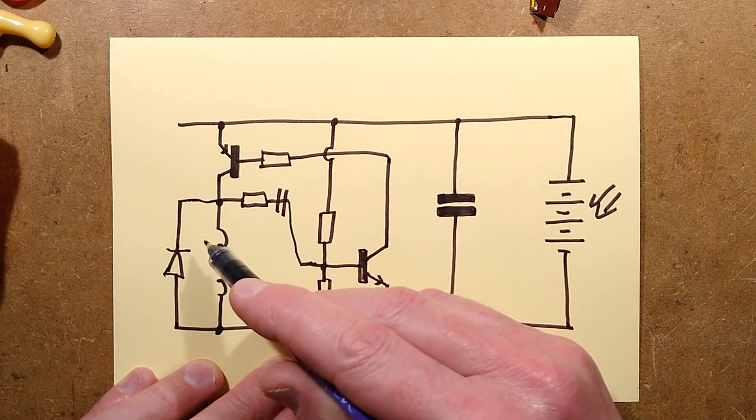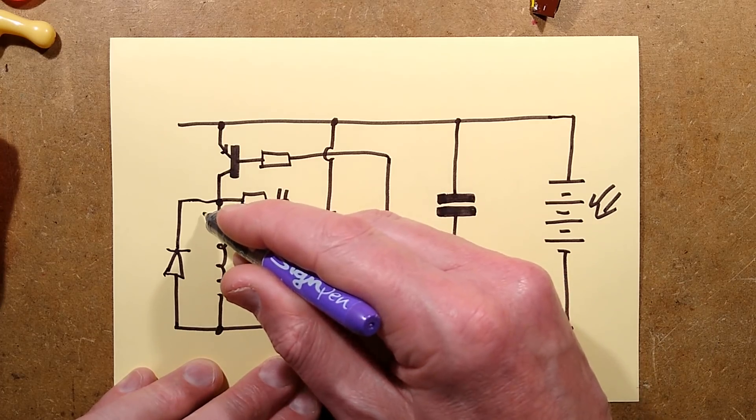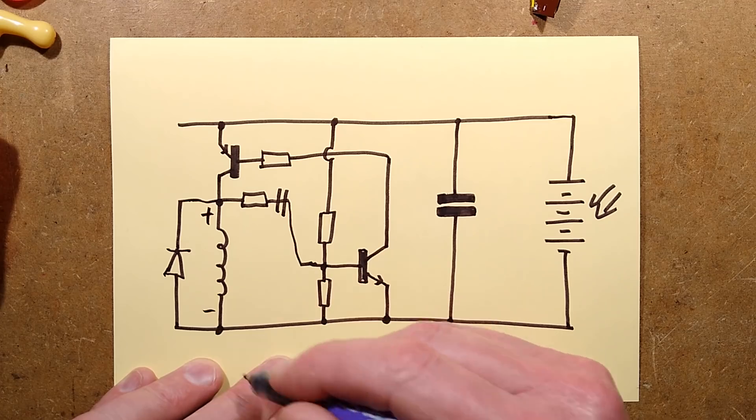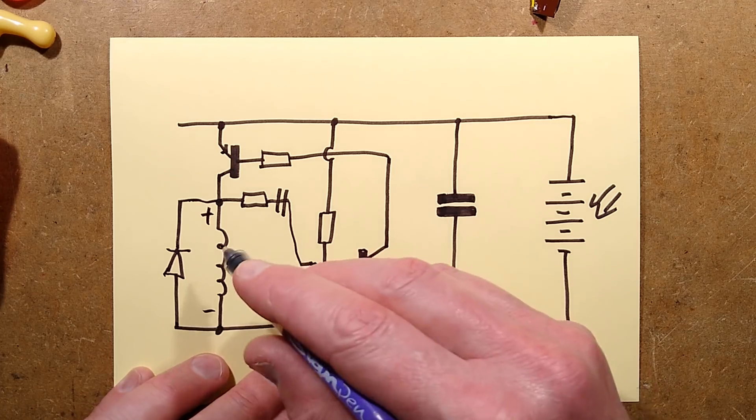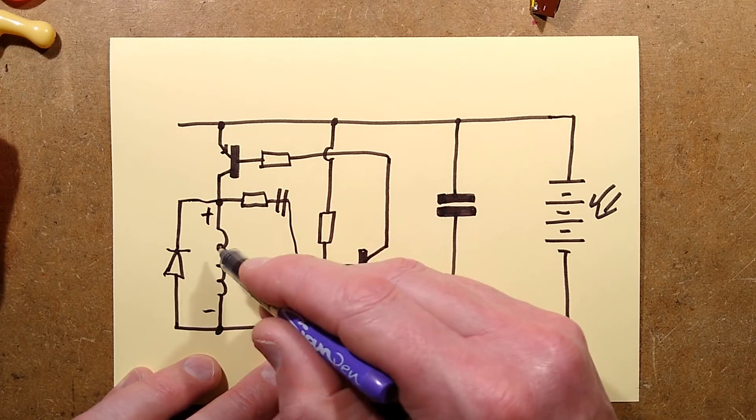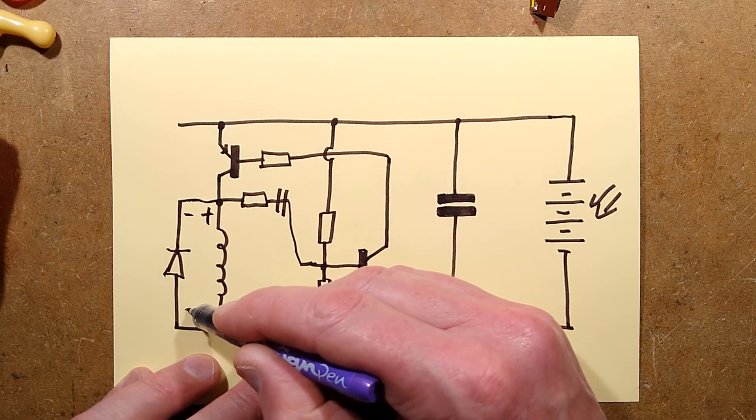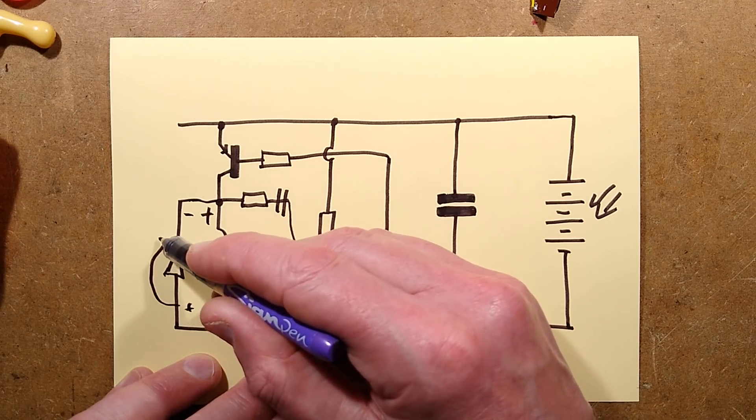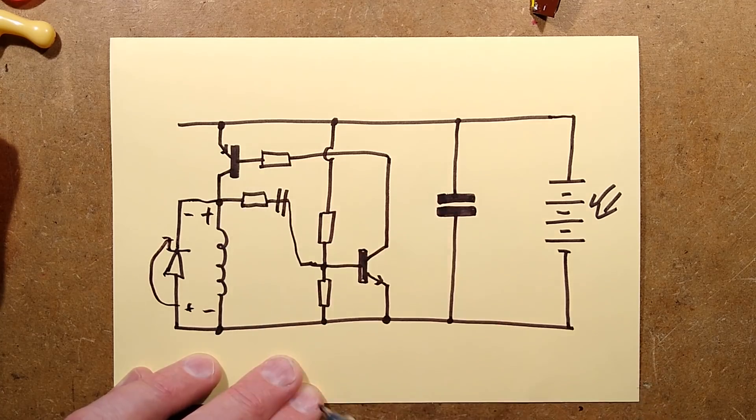I've included this back EMF diode to protect this transistor. Basically speaking, when that triggered it would pull this end of the coil positive while that was negative, and then when that transistor turned off and the field collapsed this would go negative, that would go positive, and it would find a path through that diode to avoid a voltage spike destroying that transistor.